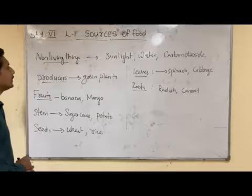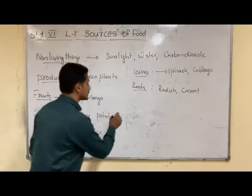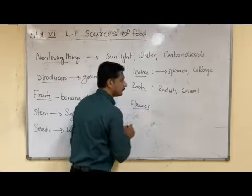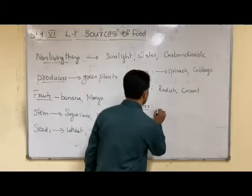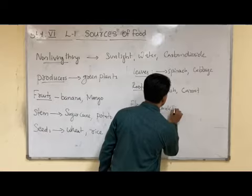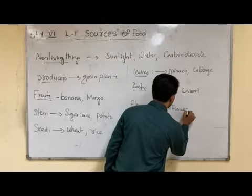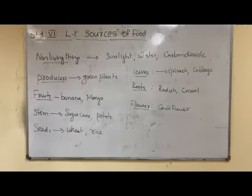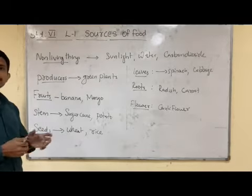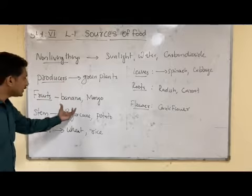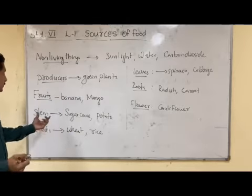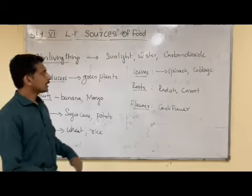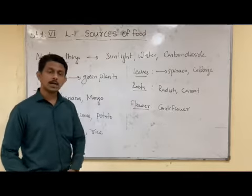We can also consider the case of flowers. In certain plants, the food is stored in their flower. For example, in the case of a cauliflower. So in this way, plants are storing their food in various places — in the form of fruit, or stem, or seeds, or leaves, or roots, or a flower.